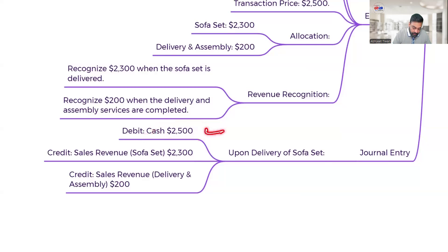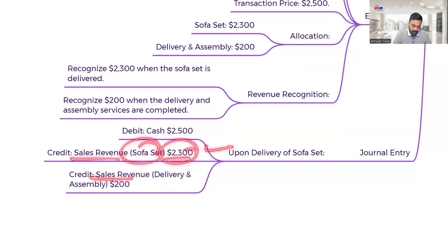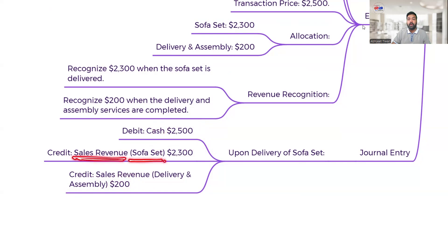The journal entry would be: debit Cash account rupees 2,500; credit Sales Revenue — Sofa Set rupees 2,300 (on completion of delivery); credit Sales Revenue — Delivery and Assembly rupees 200 (on completion of assembly services). I hope with this easy example you have understood the five-step process for recognizing revenue. Thank you for watching.